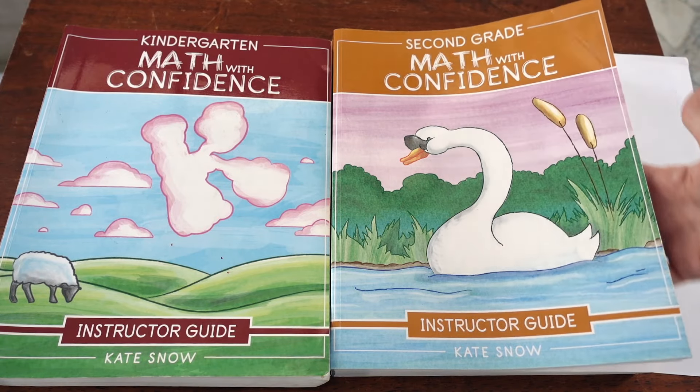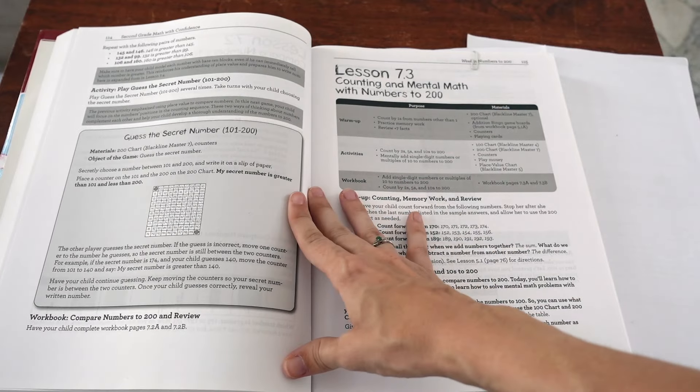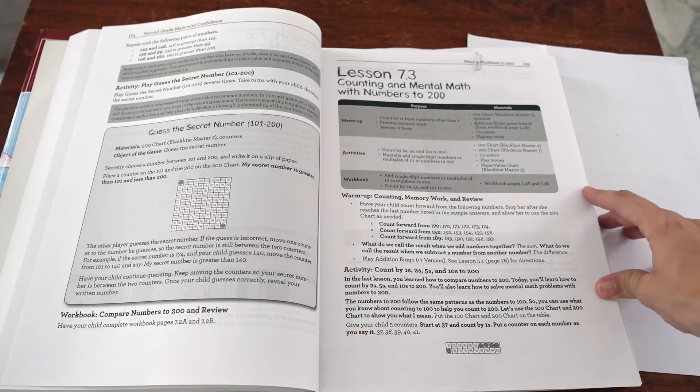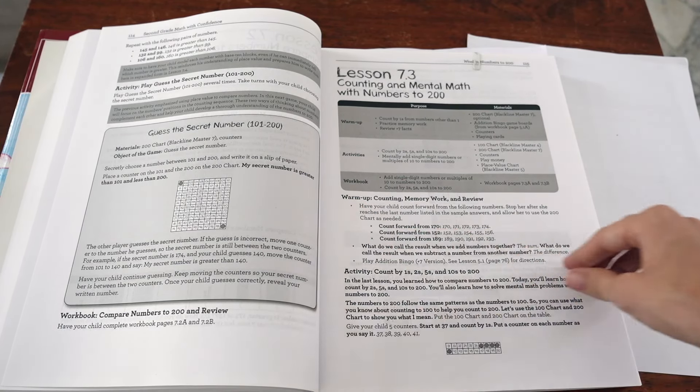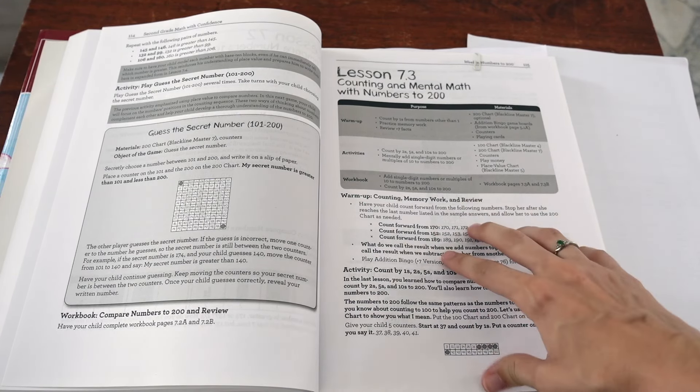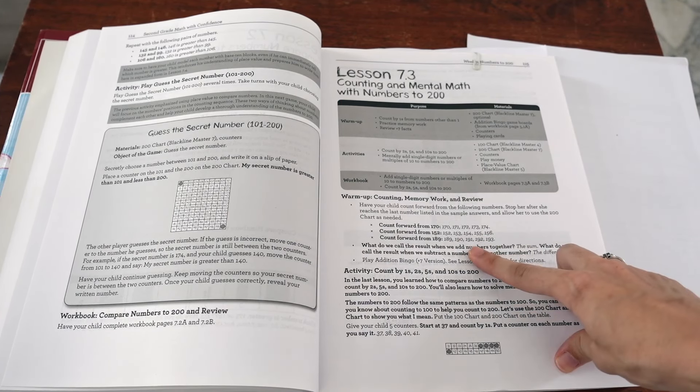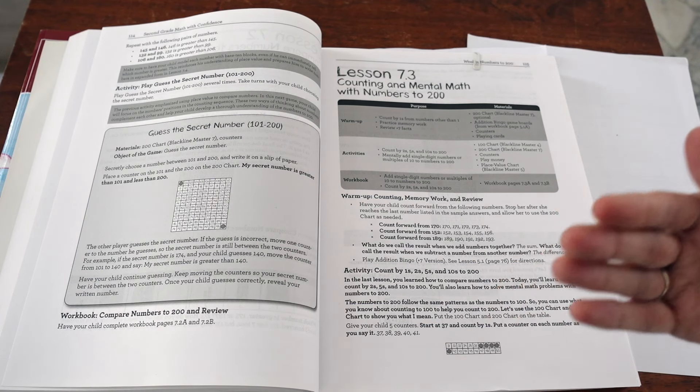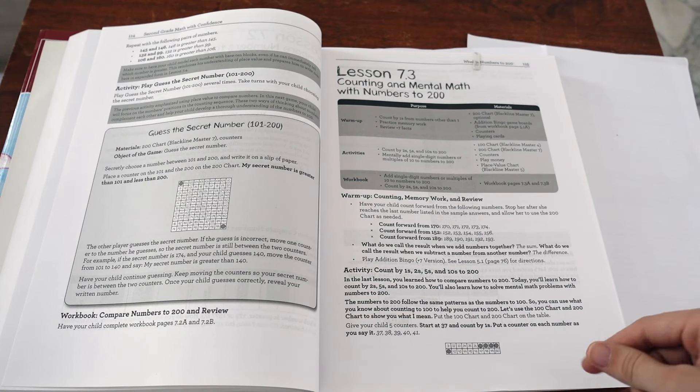Now I take a look at the second grade math with confidence in here. I've got my paper clip. Once again, we're on lesson 7.3 counting and mental math with numbers up to 200. Again, I don't really worry about what's all on here. I go straight to the warmup. I look at what is all part of the warmup. Now this son is fairly advanced in math. So I don't typically do all aspects of the review at this point because a lot of this, it's just not needed for him. He's very quick with it.